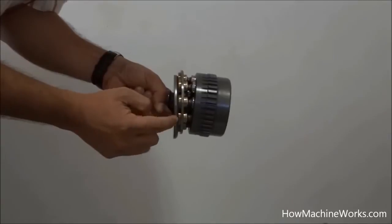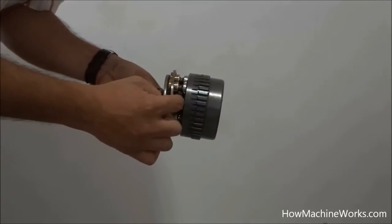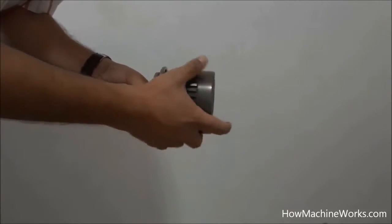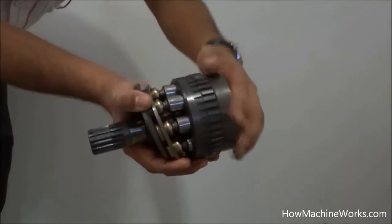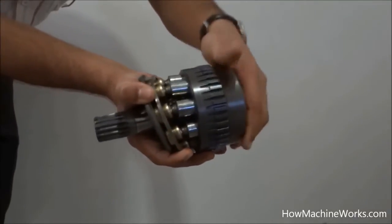And that's a swash plate over there where the pistons actually slide. So this is a variable type pump. That means the flow can be varied, normally used in tracked excavator machines.